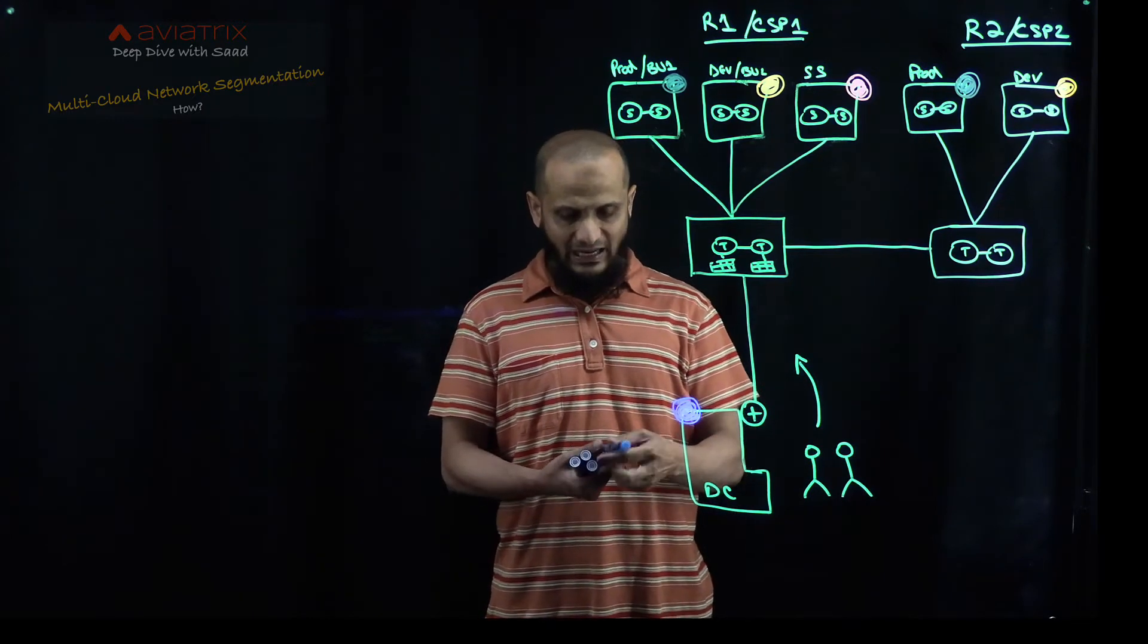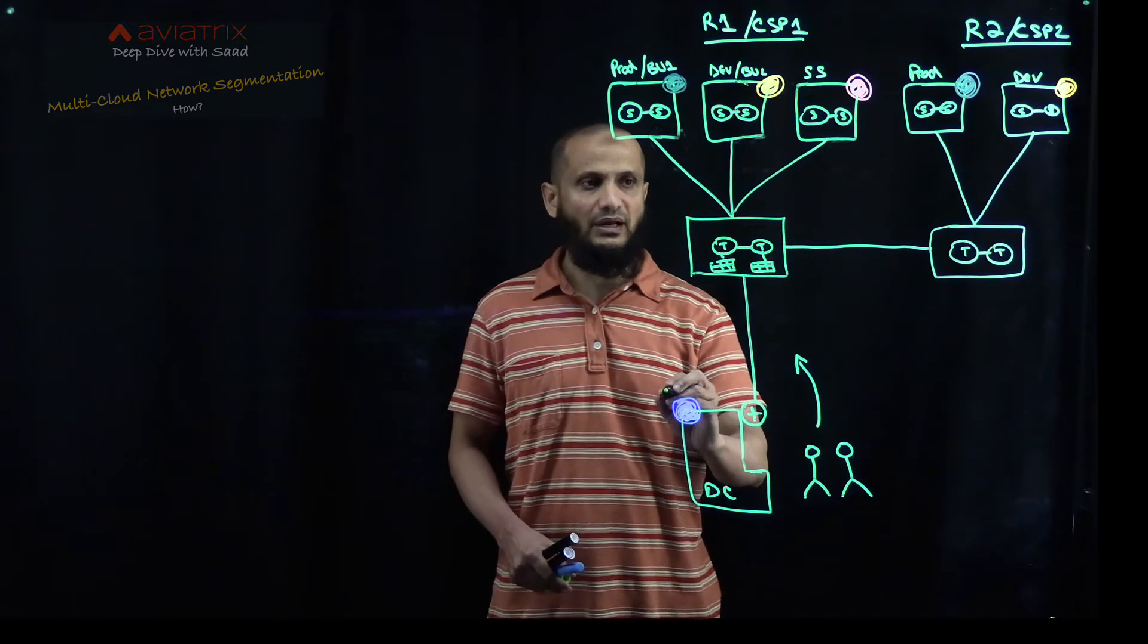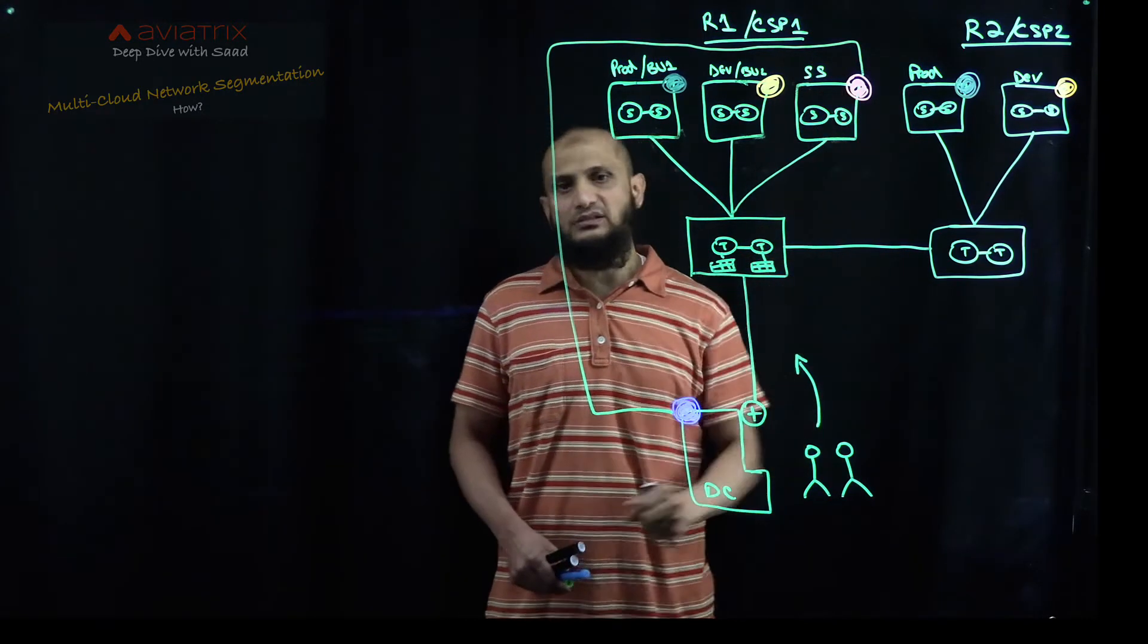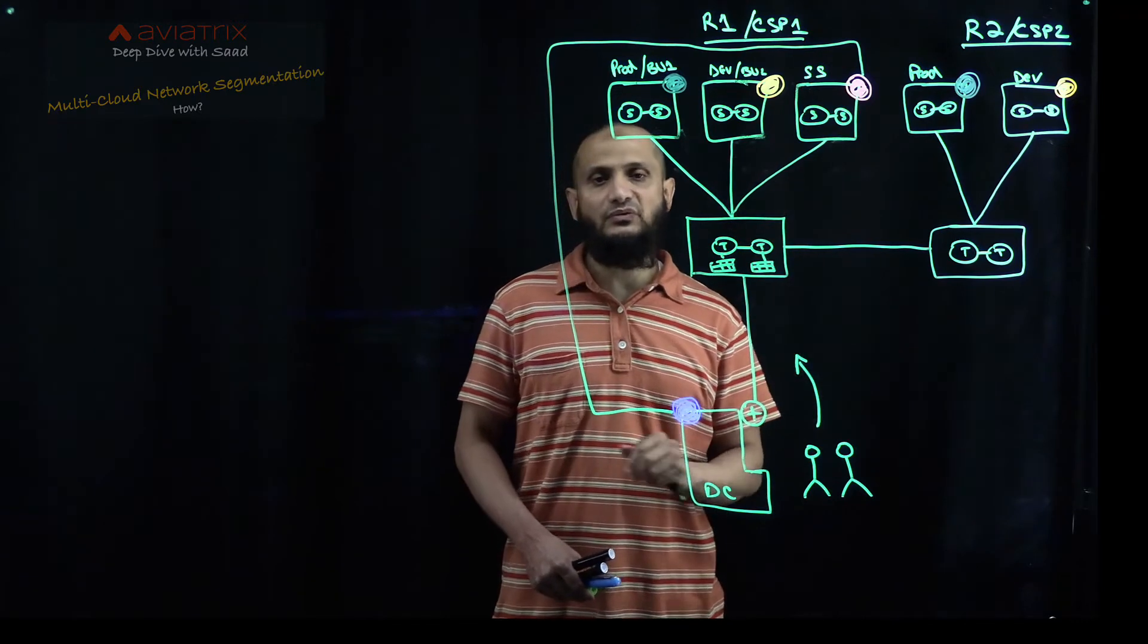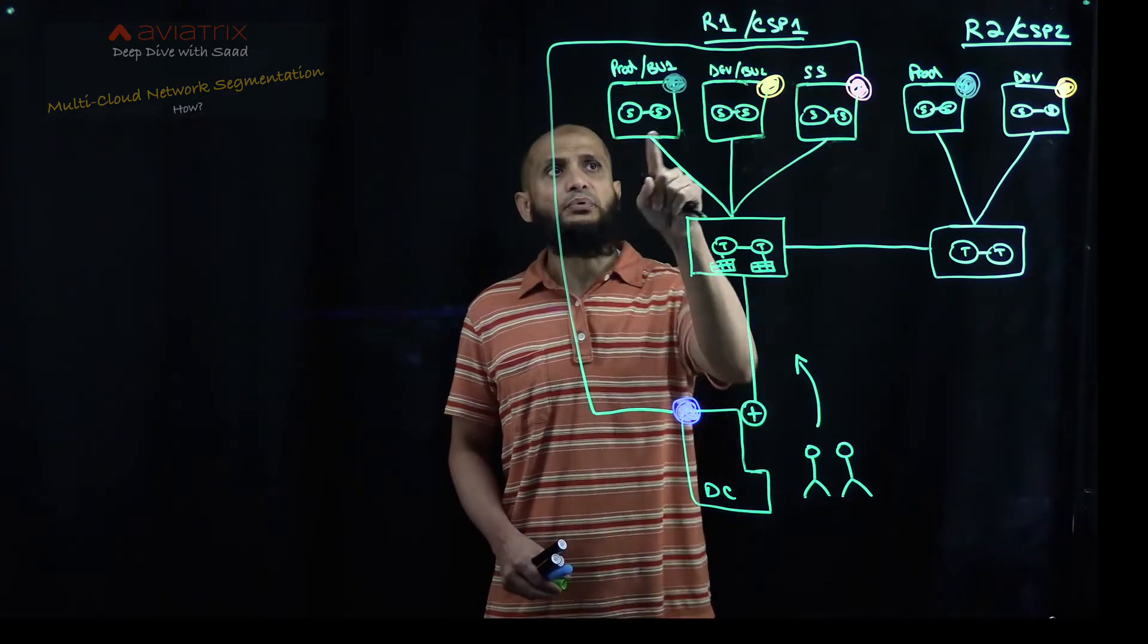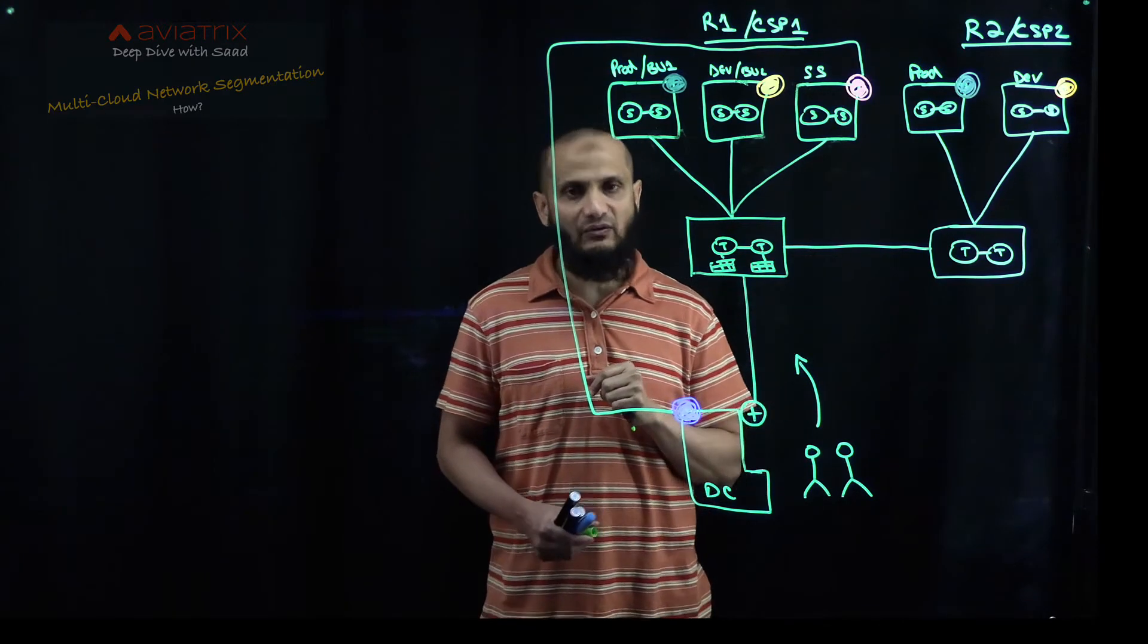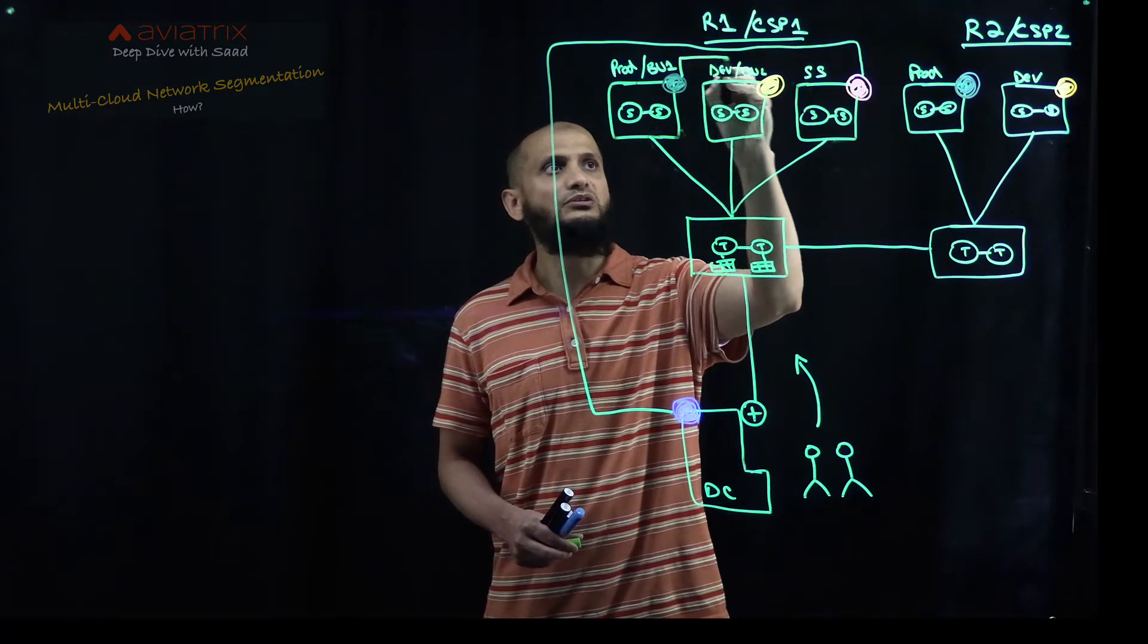So now what I'm going to do, I'm going to create a connection policy between this particular blue and then the red. Okay. As soon as you do this thing, data center or on-prem environment will be able to communicate with the shared services without any problem. At the same time, you also want that prod and dev can communicate with each other. But at the same time, you want to make sure whenever they communicate with each other, the traffic has to be first inspected by the firewalls. So what you need to do at that point, you need to create another connection policy between them. So you just do this over here.